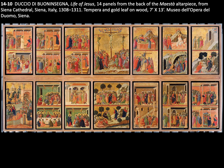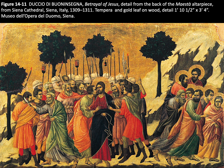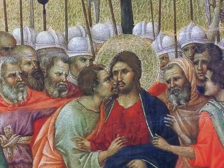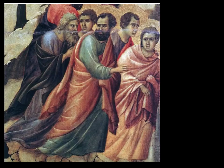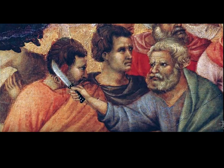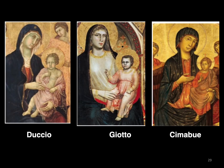This is Duccio's The Life of Jesus — 14 panels from the back of the Maesta altarpiece. We will focus on one painting: several episodes of the Betrayal of Jesus are represented. Judas has already been paid pieces of silver by Roman authorities to identify Christ with a kiss. Here are Christ's followers fleeing, and Peter comes to rescue Christ. Here is a side-by-side comparison of the Madonna and Throne done by Duccio, Giotto, and Cimabue.